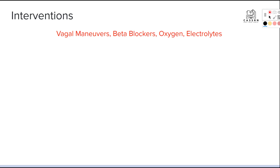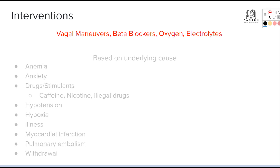For the vagal maneuver, you bear down as though you needed to pass a bowel movement, and you can teach your patients how to do that. Beta blockers are obviously a medication option. Oxygen is easy to administer, and electrolytes would be given via IV. Let's also look at cause-specific interventions based on the underlying cause.